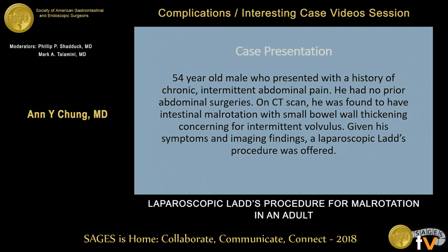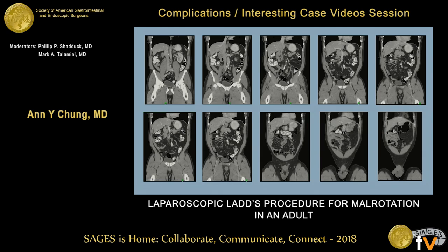Our case is a 54-year-old male who presented to our clinic with a history of chronic intermittent abdominal pain and no prior abdominal surgeries. He underwent a CT scan and was found to have intestinal malrotation with small bowel wall thickening concerning for intermittent volvulus. Given his symptoms and imaging consistent with malrotation, we offered him a laparoscopic LADS procedure. On his CT scan you can see intestinal malrotation and some small bowel wall thickening on some of his loops of small bowel.